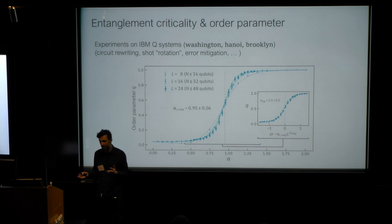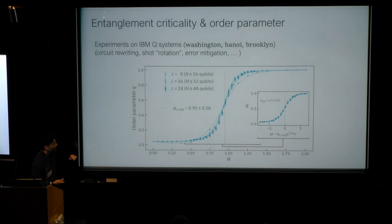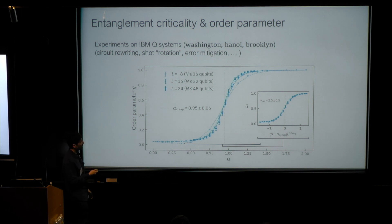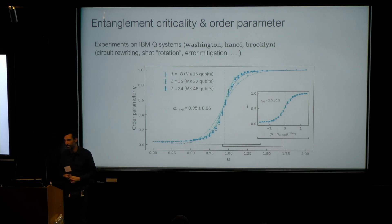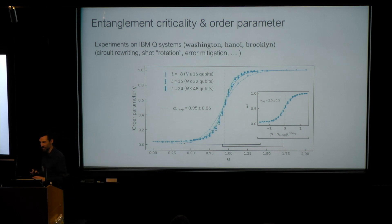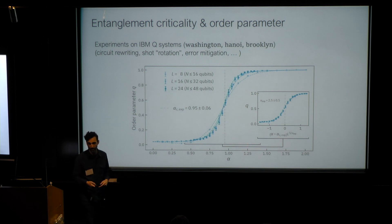We can also look at the criticality of this transition. We do a finite-size collapse of the entanglement susceptibility and extract the critical exponent nu. We find a value of 1.9, which is basically what we expect from spin glass theory. We implemented these circuits on the IBM quantum computers, using a bunch of their devices and some tricks. Here I'm showing results for three system sizes up to 48 qubits. The solid lines are the classical calculations of the order parameter, and the points are what we get from the device. We see the sharpening of the phase transition, and we find the right critical exponent and the right position for the phase transition.